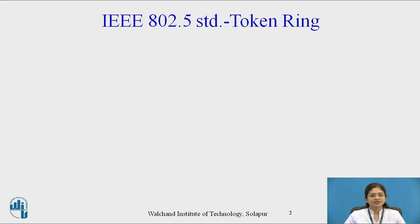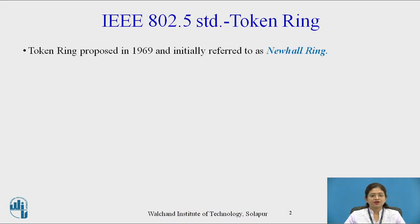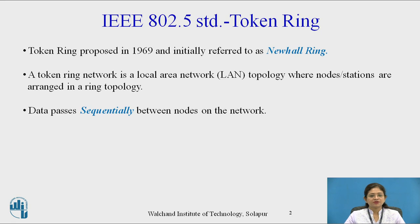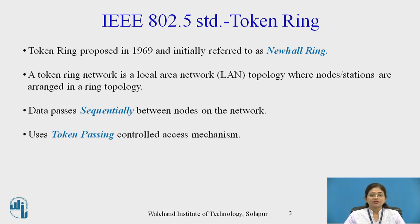Let me start with the history of token ring. Token ring was proposed in 1969 and initially referred to as a Newhall ring. Token ring network is a local area network topology where nodes or stations are arranged in a ring topology. Data passes sequentially between nodes, and the direction is either clockwise or anticlockwise. It uses the token passing control access mechanism.